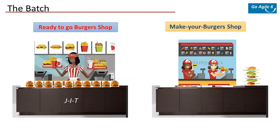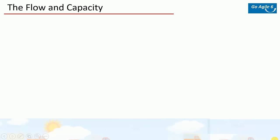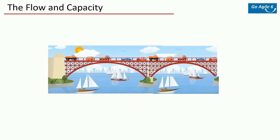Now let's look at flow and capacity. Imagine there is a bridge — at any given time there cannot be more than 100 vehicles on it. That's the maximum capacity. Technically you could fit 200 cars, but if you allow that many to continuously go, it causes chaos, traffic mess, delays, and accidents — which can even collapse the bridge. So never maintain at full capacity; you won't have a smooth flow.